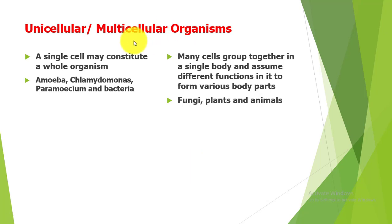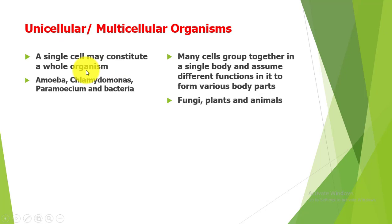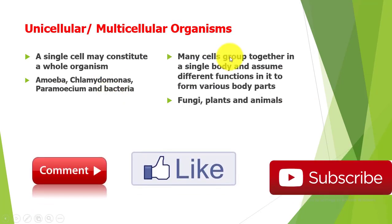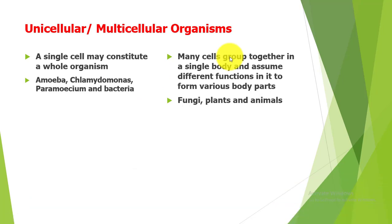There are basically two types of organisms: unicellular and multicellular. Unicellular organisms consist of a single cell that can live on its own — a single cell constitutes the whole organism. Examples include Amoeba, Chlamydomonas, Paramecium, and Bacteria. Multicellular organisms have many cells grouped together in a single body, and these cells assume different functions to form various body parts.